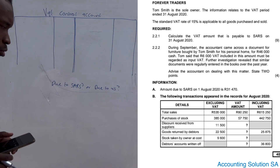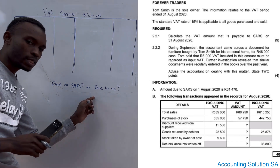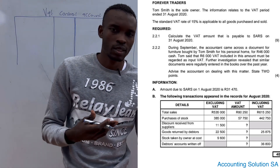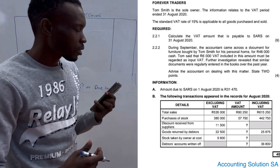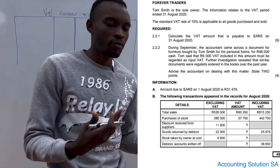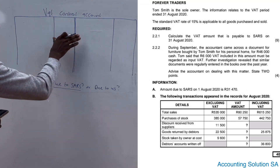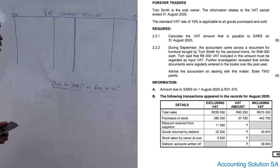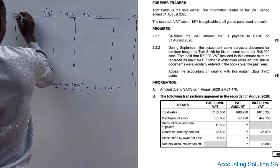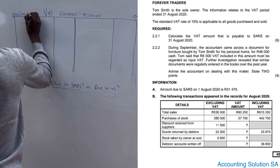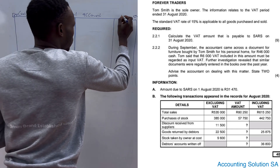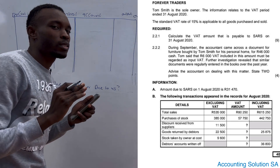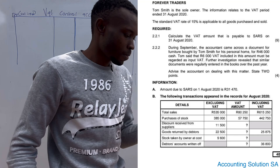When we calculate a VAT control account, we must be able to answer this by the end of the lesson. Due to SARS means that we owe SARS some cash. Due to us simply means that SARS owes us — we have to get a refund. Now, the VAT control account has a debit side as well as a credit side. Everything that is VAT input must be recorded on the debit side; all output goes on the credit side.